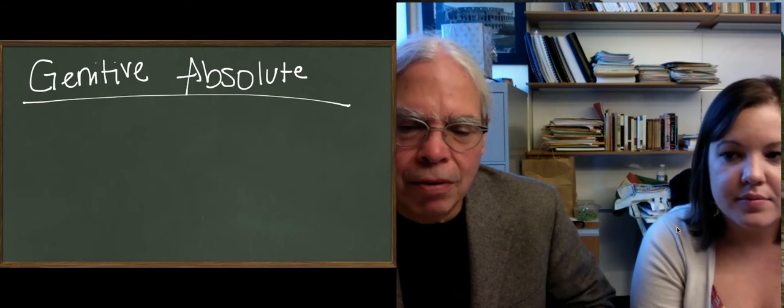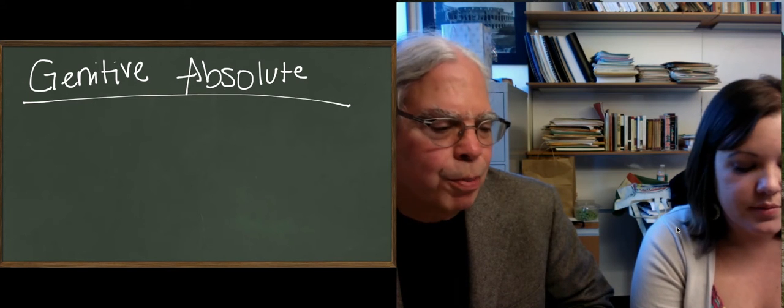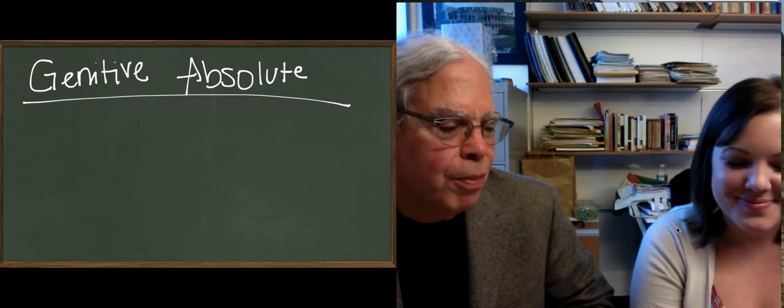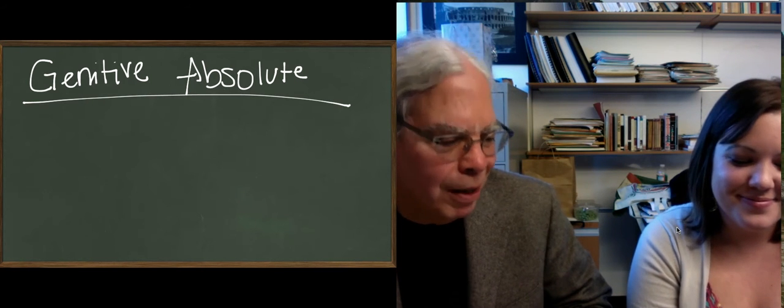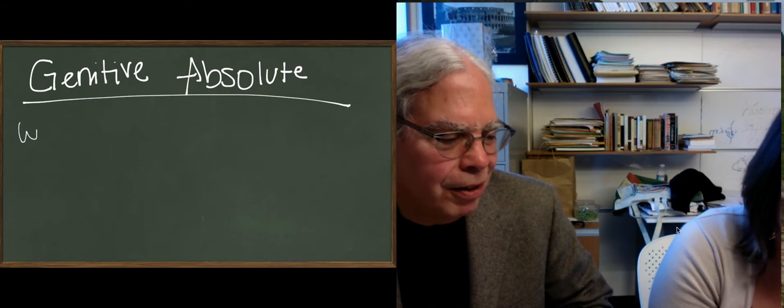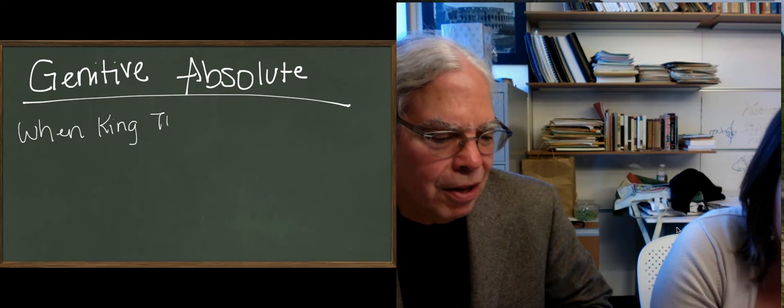So, how can this be? Well, here's my stupid example of what a sentence with a grammatically absolved subordinate clause is. When King Tut came, you can write this down, when King Tut came, they tethered their elephants.